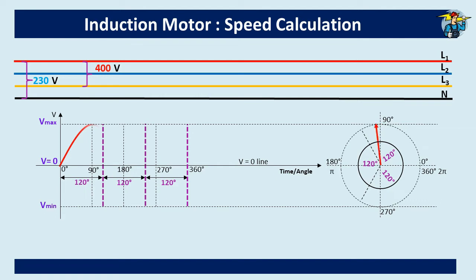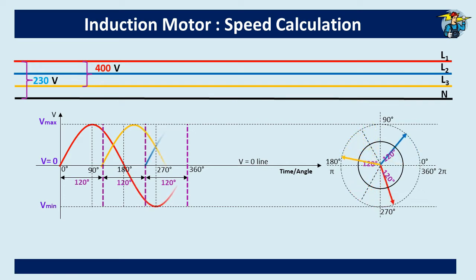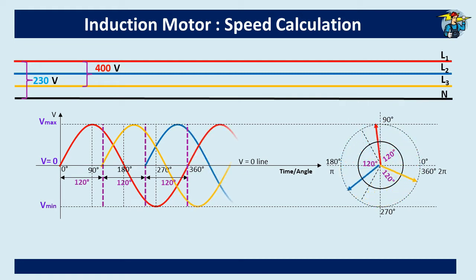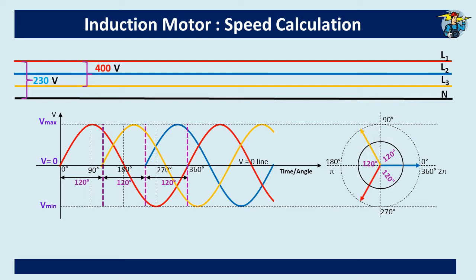If the red line of three phases reaches its peak value on its sinusoidal waveform at some point, then the yellow line reaches its peak value at a point 120 degrees later. Likewise, the third phase, blue, reaches its maximum value after another 120 degrees, making a rotating magnetic field in the direction of R-Y-B. Single-phase motors also produce a rotating magnetic field but need a capacitor at start to produce the additional phase needed with a different angle.